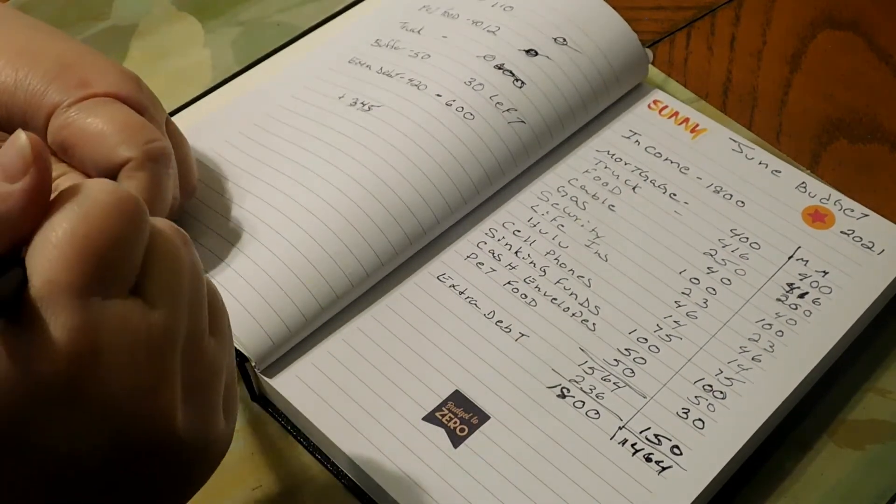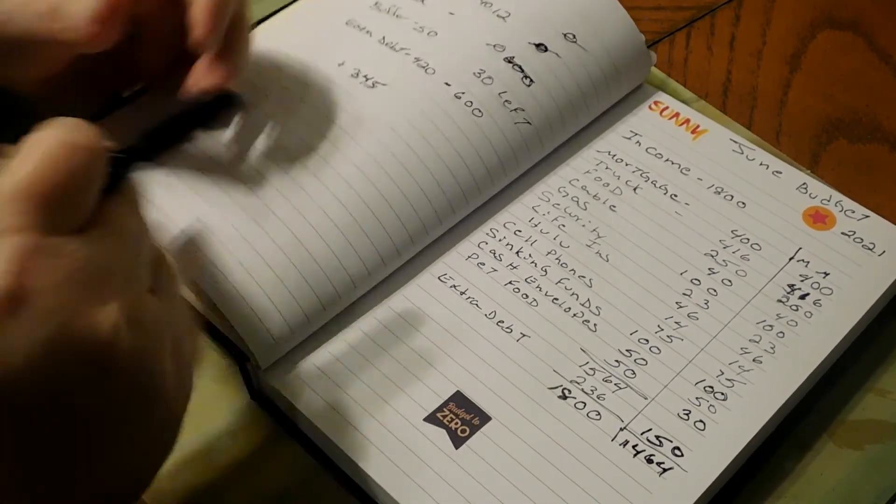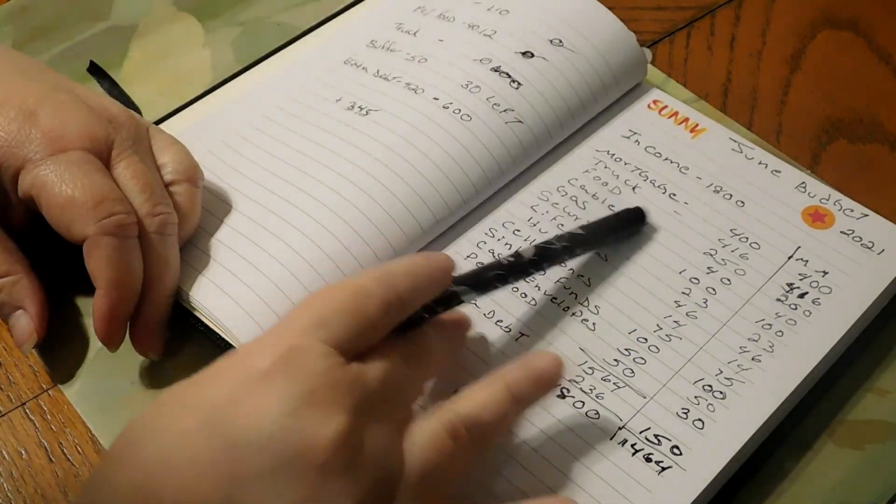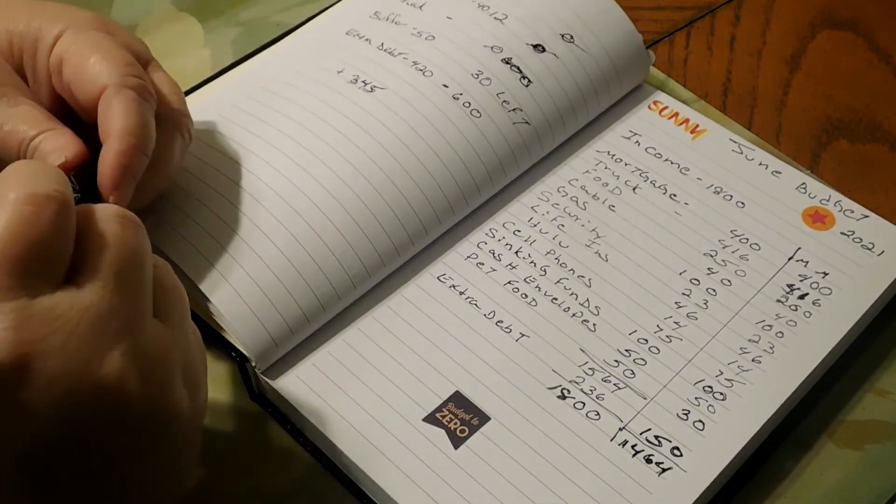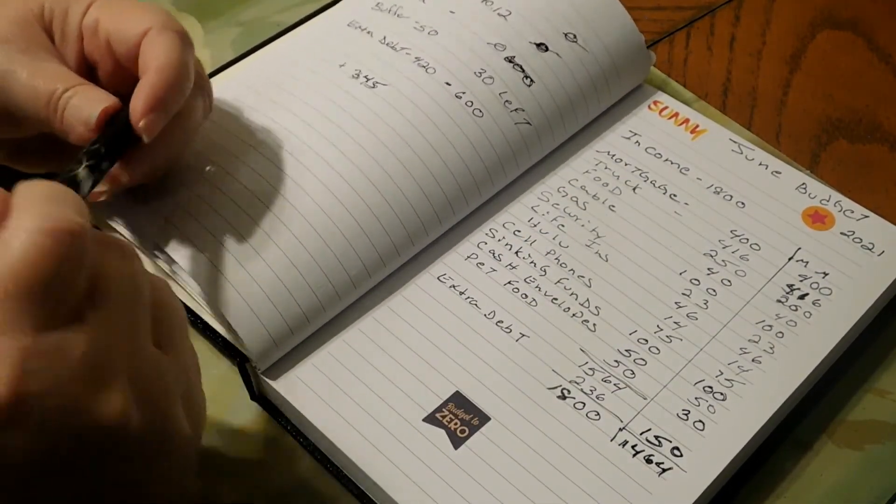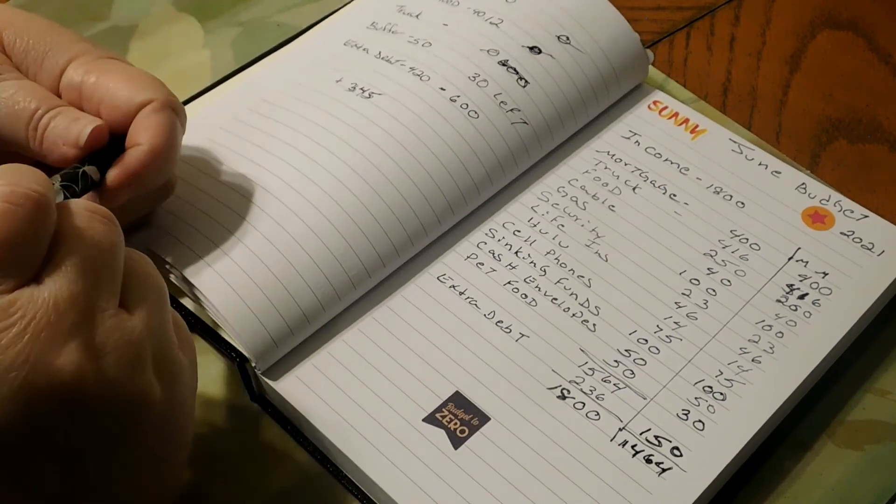Hopefully the last two weeks of June we can stay under budget for food and hopefully pay off the rest that we need to pay off of the $1,042 for the truck payment for the month of June.